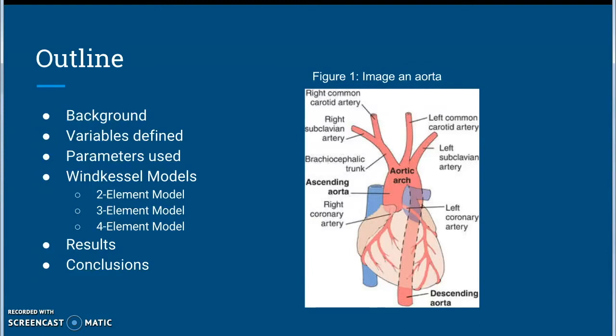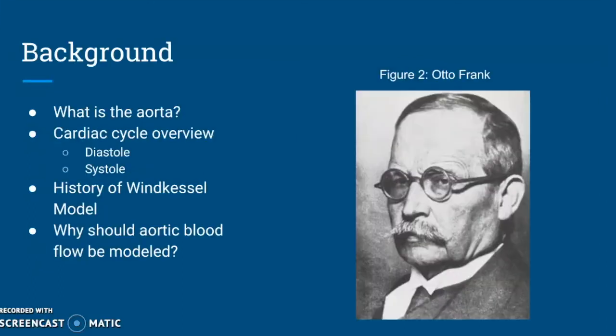We will then discuss our results and finally our conclusions. The aorta is a part of the human circulatory system and its largest artery. The cardiac cycle involves the heart pumping blood throughout the human body each time it beats. The cardiac cycle is a closed-loop system. There are two phases of the cardiac cycle: diastole and systole. During diastole the ventricles are relaxed and allow blood to flow in; during systole the ventricles contract and eject blood into the body throughout the aorta. Aortic pressure is at maximum during systole and minimum during diastole.